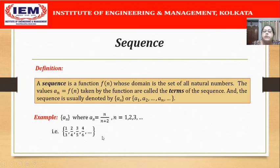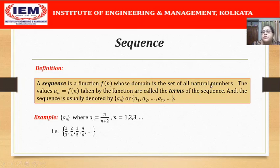One thing we should remember at this point is that sometimes the domain of the sequence is taken as not just the set of natural numbers but 0 is also included. That means sometimes the sequence may start from a_0 instead of a_1.